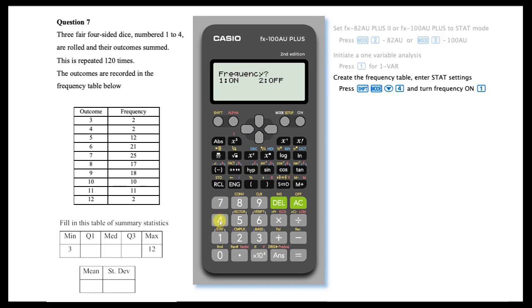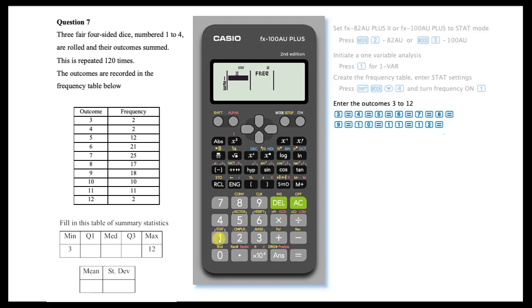Turn the FREQUENCY column ON by pressing 1. Enter the outcomes 3 through 12, with each entry followed by equals.